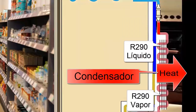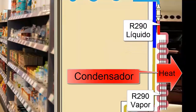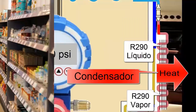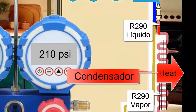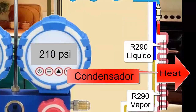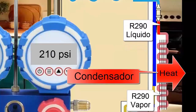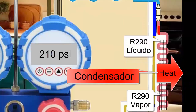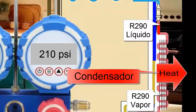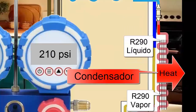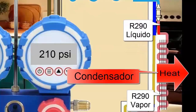As the R290 refrigerant loses heat in the condenser, it changes from a gaseous state to a liquid state. The pressure of the R290 refrigerant in the condenser remains at 210 pounds per square inch, but the R290 significantly decreases its temperature. This decrease in temperature in the condenser allows the refrigerant to transition from a vapor state to a liquid state.